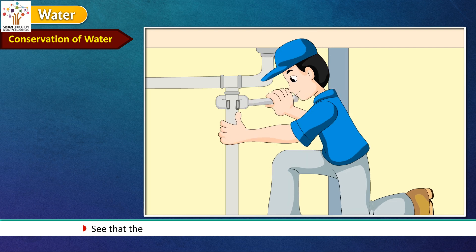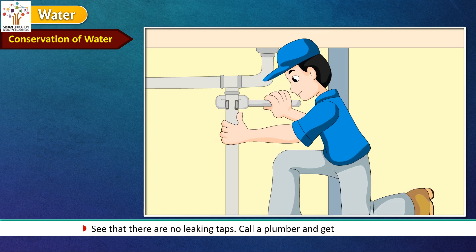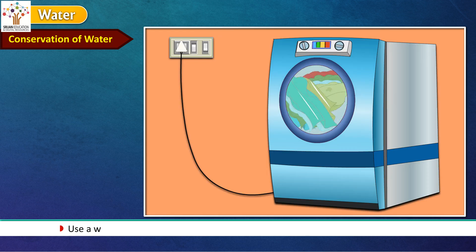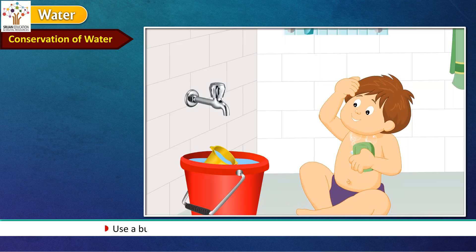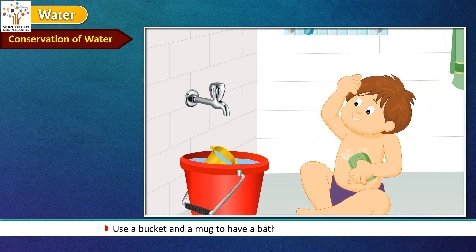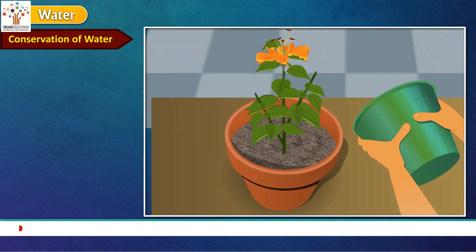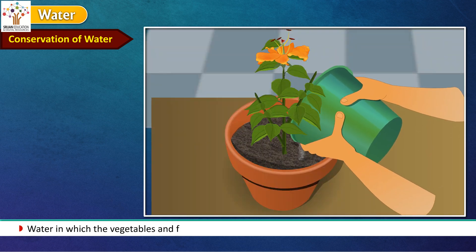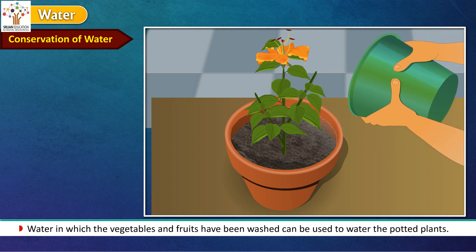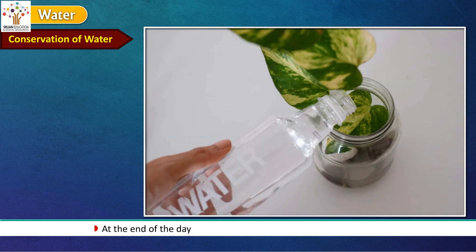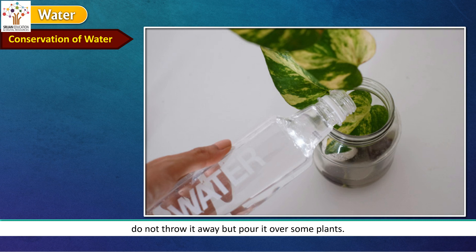See that there are no leaking taps. Call a plumber and get them fixed. Use a washing machine that does not consume too much water to wash clothes. Use a bucket and a mug to have a bath instead of a shower. Water in which the vegetables and fruits have been washed can be used to water the potted plants. At the end of the day, if you have water left in your water bottle, do not throw it away but pour it over some plants.